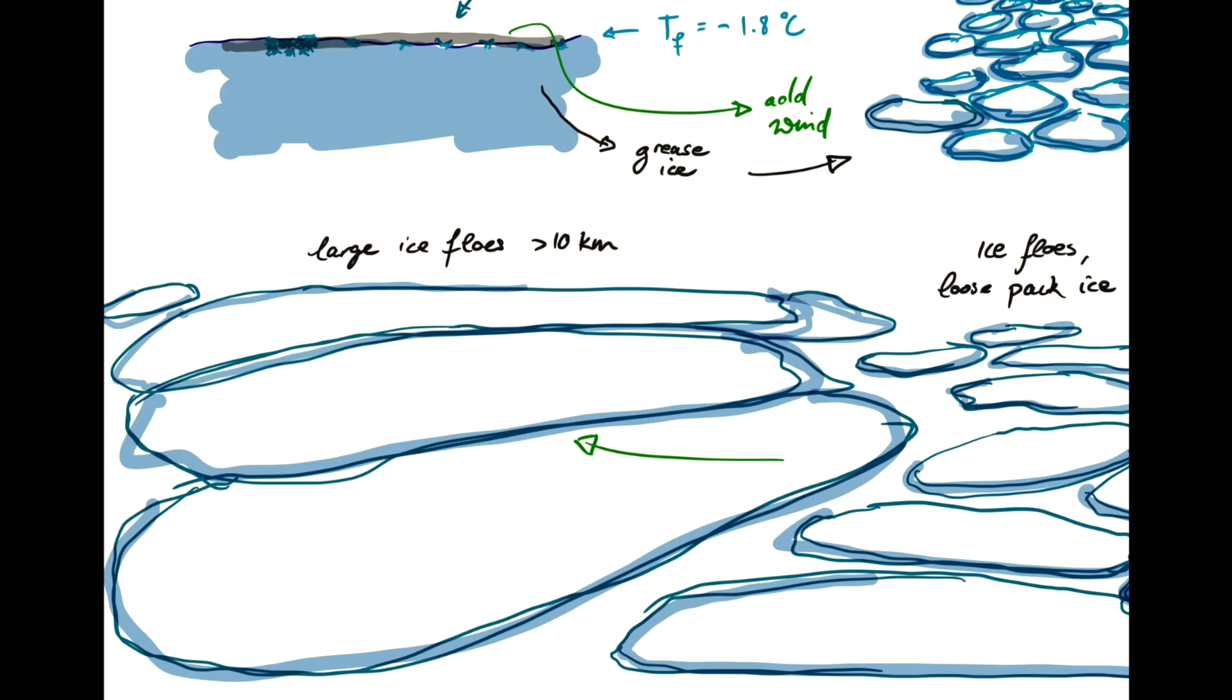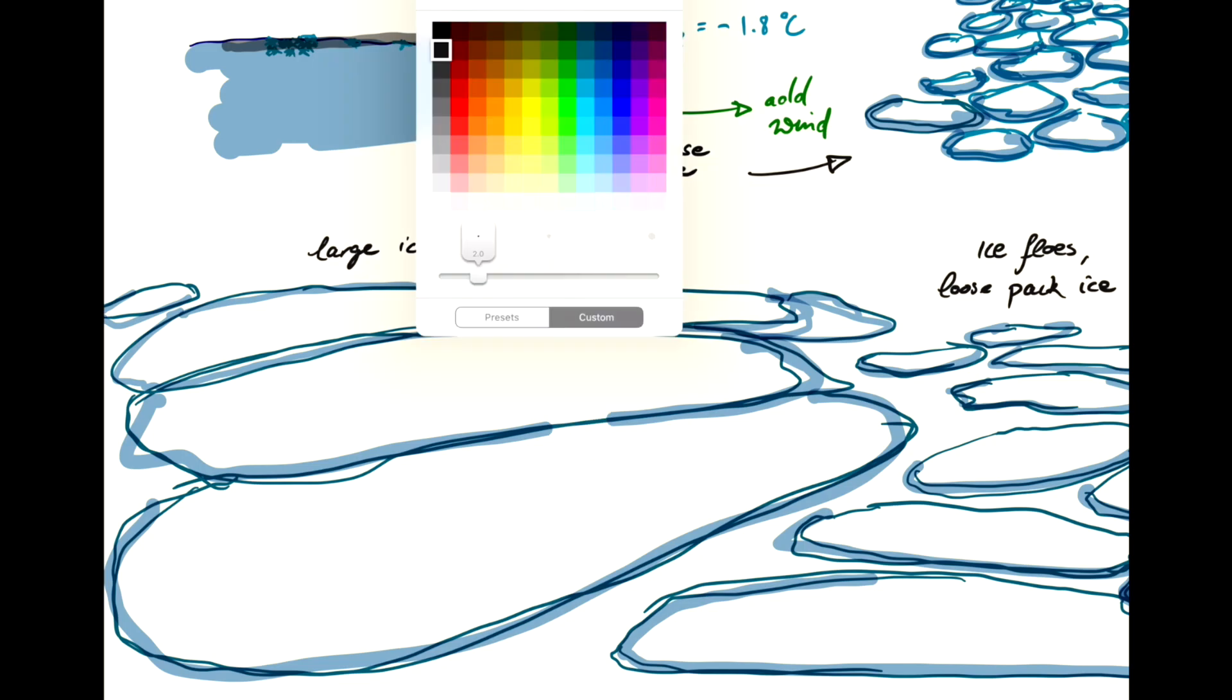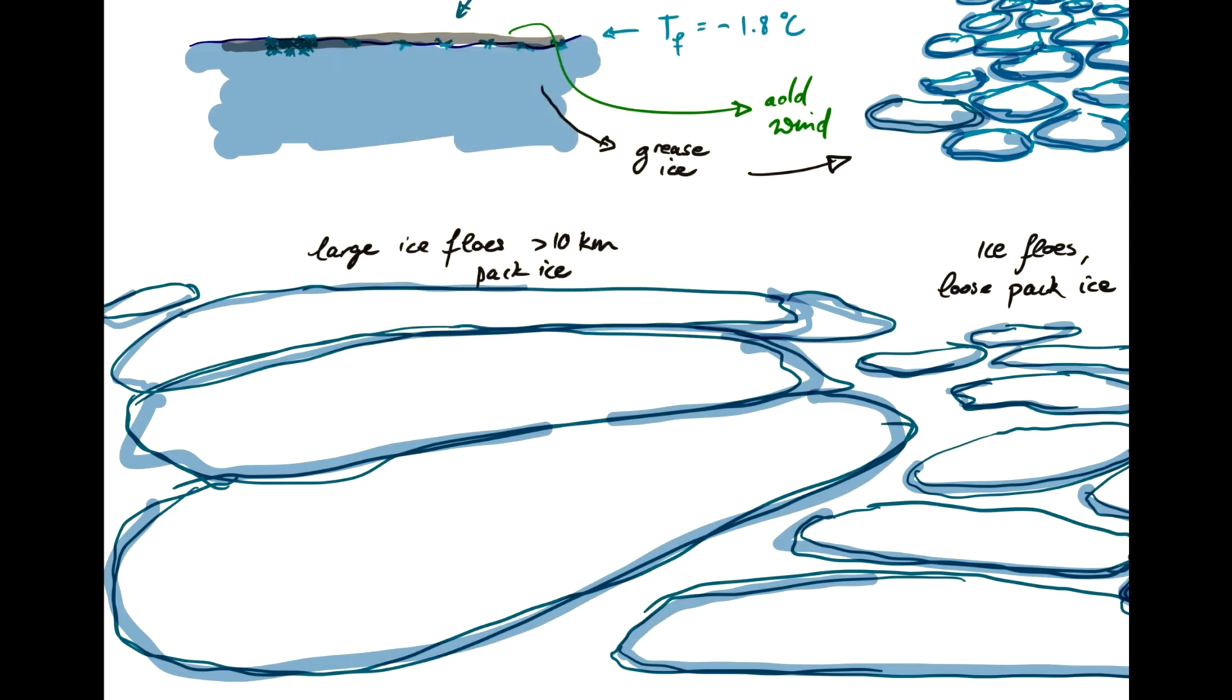And this is what you would call the pack ice. They can still break up. Sometimes you may have divergent winds. So imagine a region where the wind here blows in this direction and the wind here blows in that direction. And then you open up a crack. You break the ice apart and pull it apart.